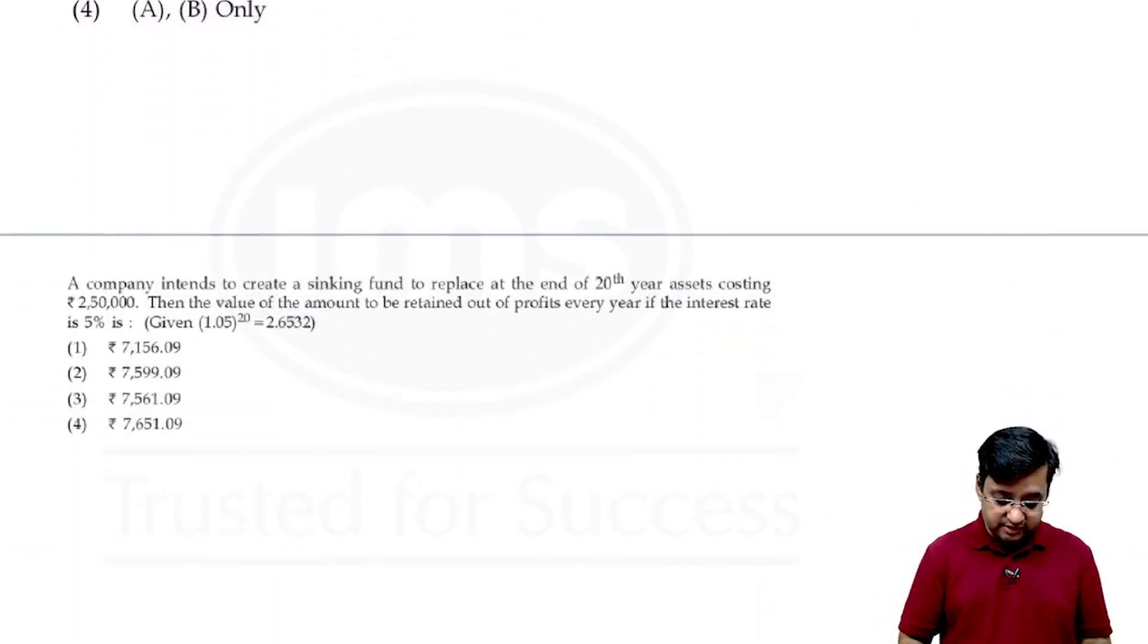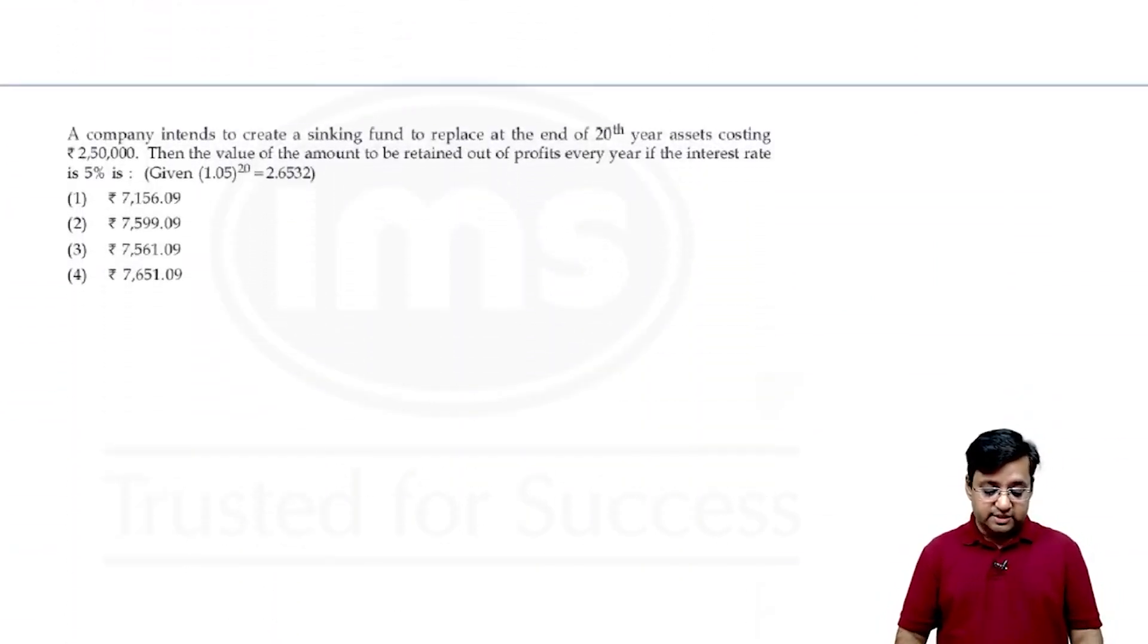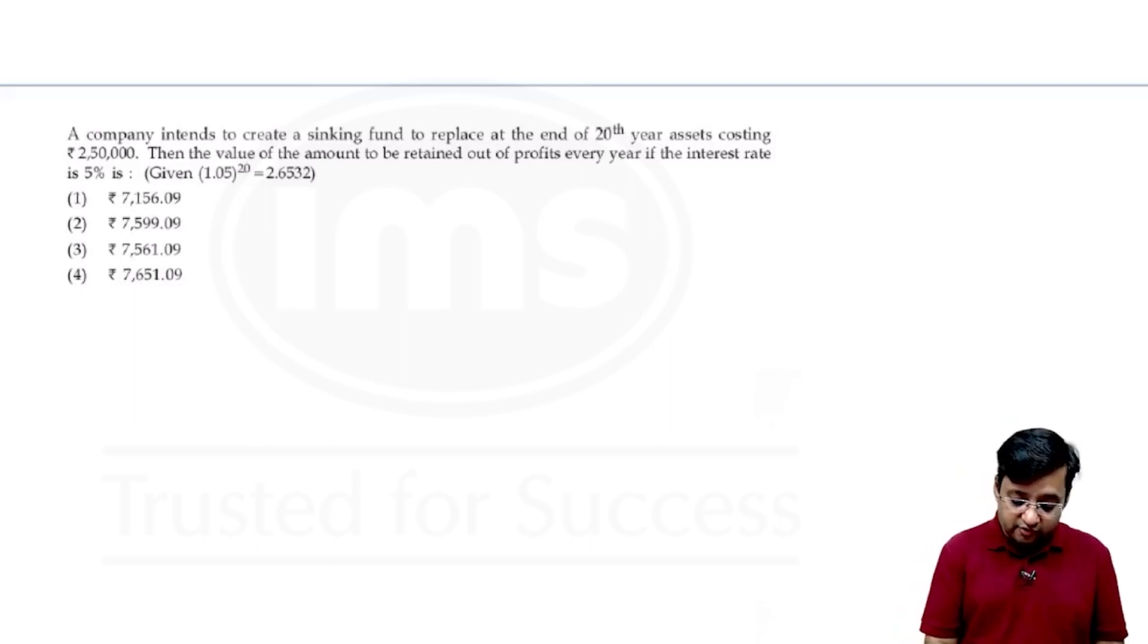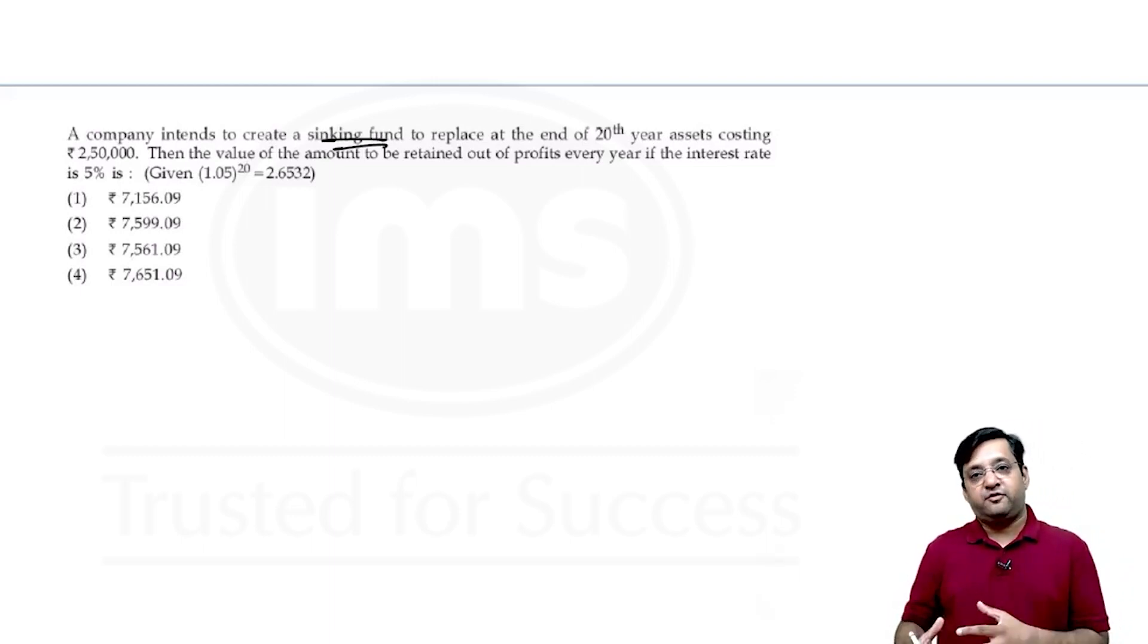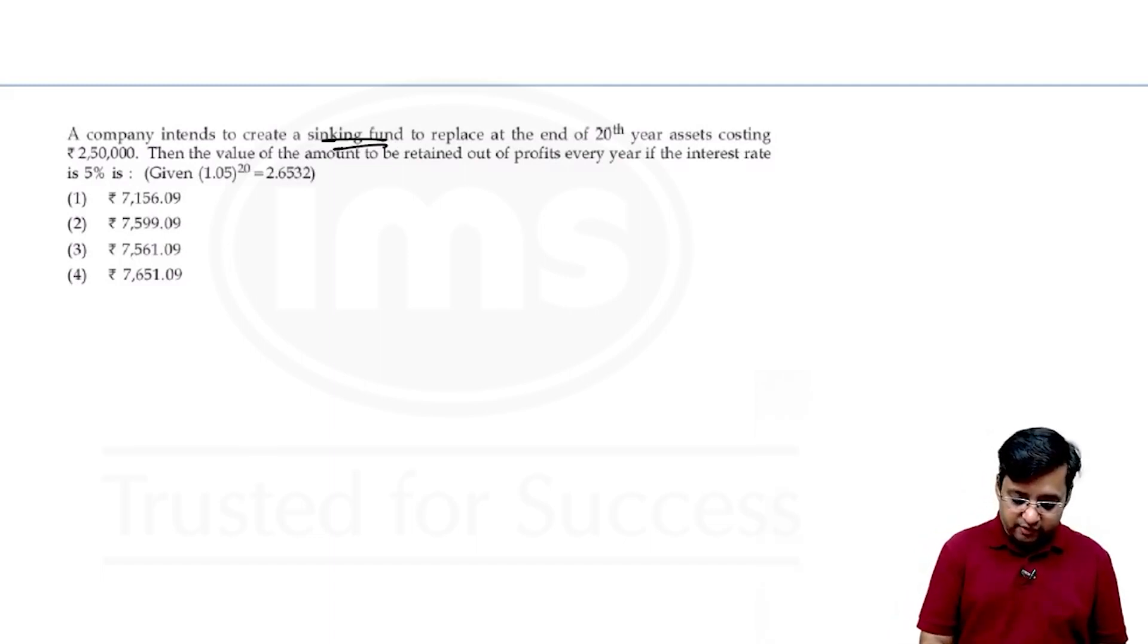Now moving to the next question. The next question says a company intends to create a sinking fund to replace at the end of 20th year asset costing rupees 2 lakh 50,000. Then the value of the amount to be retained out of profit every year if the interest rate is 5%. Now this is a question of sinking fund.